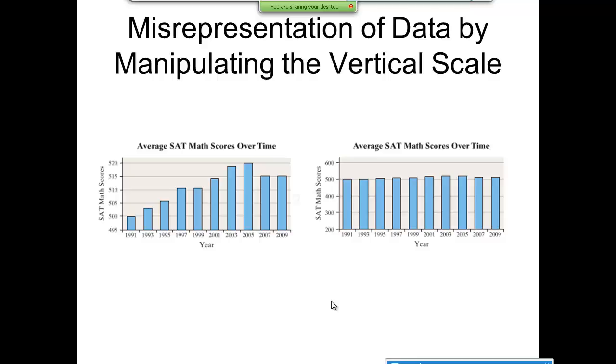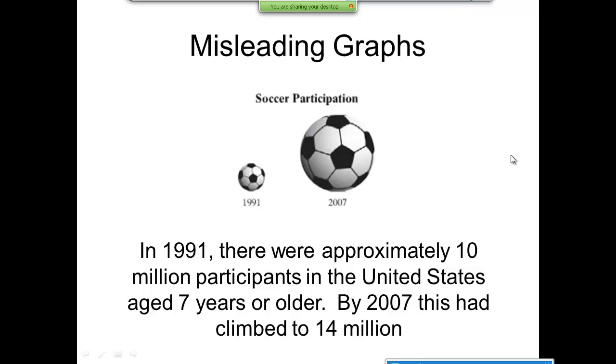Here's one—they like to pick on USA Today on this. They oftentimes have misleading graphs. This shows a soccer ball in 1991 and one in 2007, where the soccer ball represents the number of participants. In 1991 there were approximately 10 million participants in the United States age seven years or older. By 2007 this had climbed to 14 million. That's a significant increase, but if you look at the ball size it looks like it's maybe four or five times as big. Ten million hasn't grown four or five times, so it's misleading.